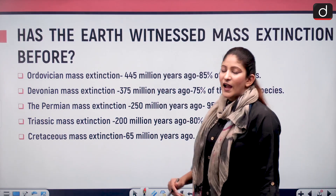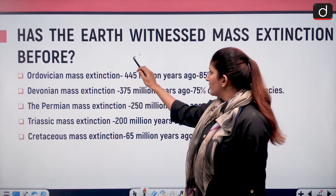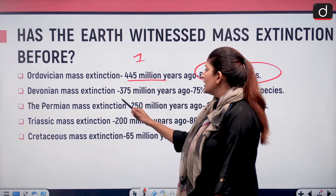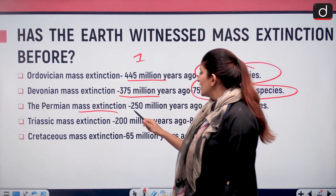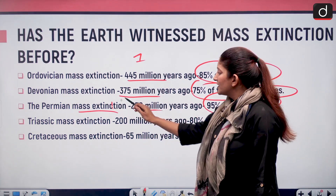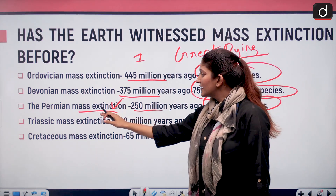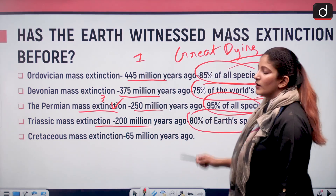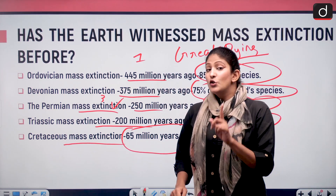Has the earth ever experienced mass extinction? Yes, five times. The Ordovician mass extinction — the first — happened 445 million years ago and wiped out 85 percent of all species. The Devonian mass extinction, the second, occurred about 375 million years ago and wiped out 75 percent of species. The Permian mass extinction happened 250 million years ago and wiped out 95 percent of species — this is also known as the 'Great Dying,' an important prelims fact. The Triassic mass extinction was 200 million years ago and wiped out 80 percent of earth's species including certain dinosaurs. The Cretaceous mass extinction happened 65 million years ago, when the non-avian species of dinosaurs became extinct.